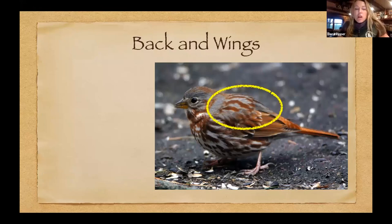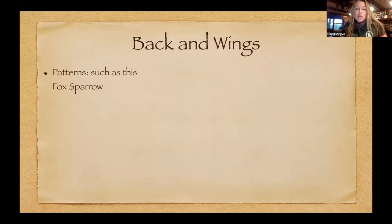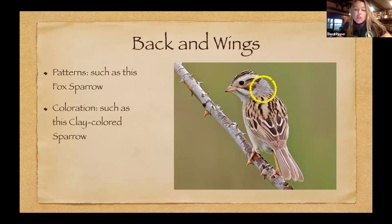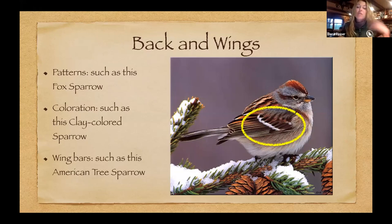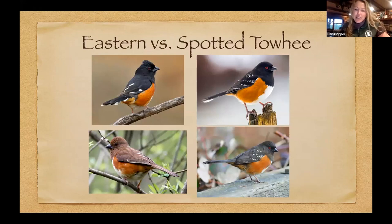On back and wing pattern and coloration: the patterning on the back — prominent gray and reddish rufous stripes — is a spot-on ID characteristic for the clay-colored sparrow. It's important to notice the color of the nape of the neck and wing bars. Folks who study birds talk about wing bars all the time; sometimes whether a bird has a wing bar or not is what differentiates two species. The eastern versus spotted towhee is an extreme example where the pattern of the back and wings is exactly how we differentiate them. By the way, the towhee is the biggest sparrow.